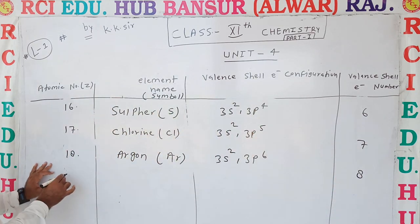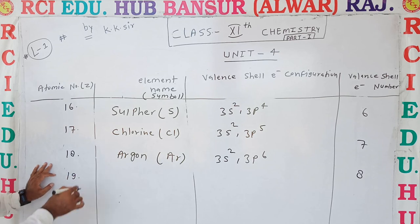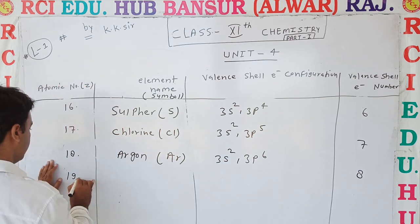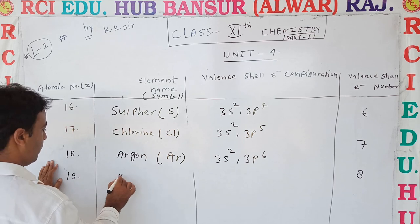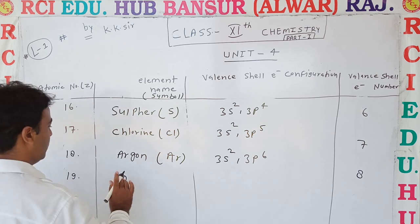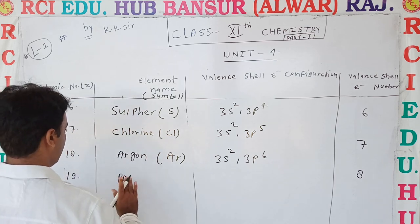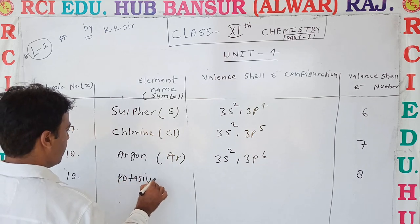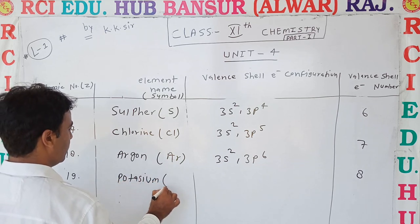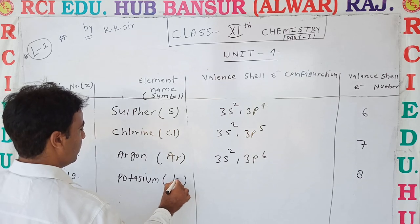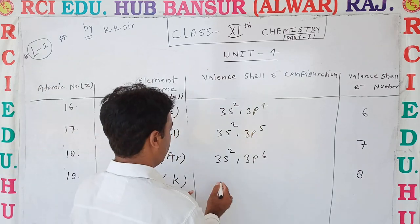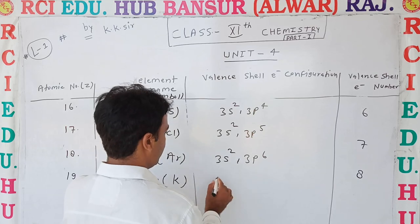Atomic number 19 is Potassium, symbol K. Its electronic configuration includes the Argon core, and the valence electron configuration is 4s1.